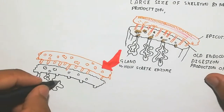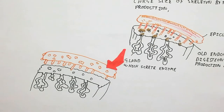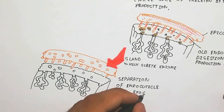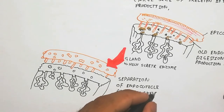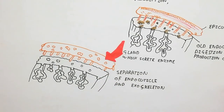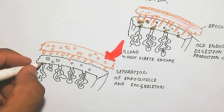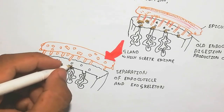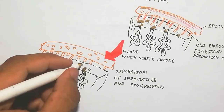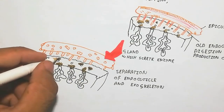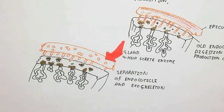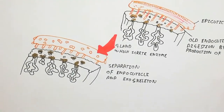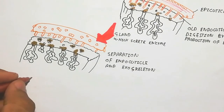The exoskeleton and endocuticle separate due to enzyme production. The ecdysis process is controlled by the hormone actaizen through the nervous system. The nervous system controls the whole process.